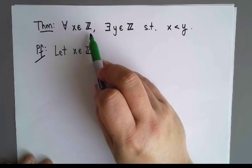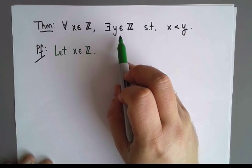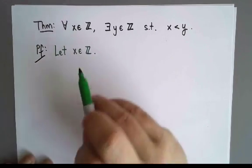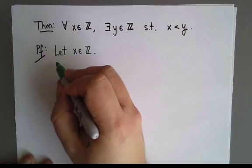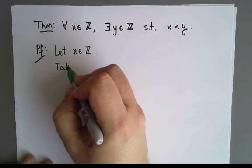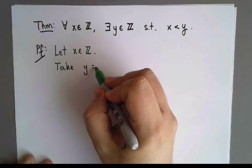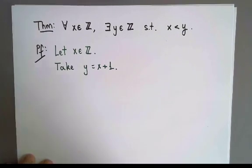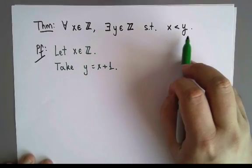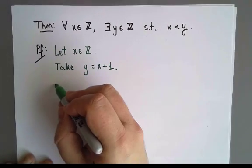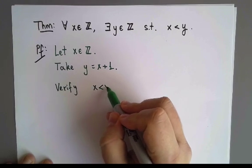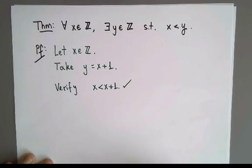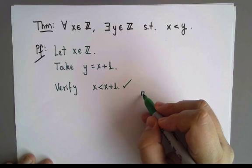Now, once I have this value of x, I need to show what one value of y works for it. I only need one value of y, and since I only need one I get to choose it and must provide it. So I'm going to say: take y = x + 1. Now that I have chosen y, I need to verify the statement is true. To conclude, I verify that x is actually less than x + 1 — and yes, this is true. I don't need to check anything else, and that completes the proof.